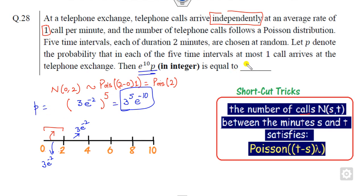You can substitute here. The right answer is three raised to power five, that is 243. You can simply remember this shortcut: the number of calls in between any time interval t minus s of the Poisson distribution. This is a very simple question about Poisson distribution.